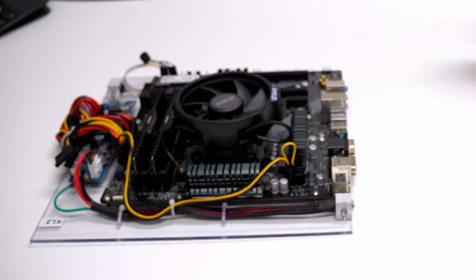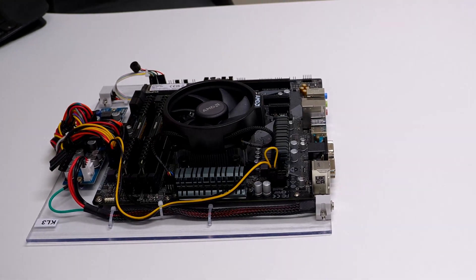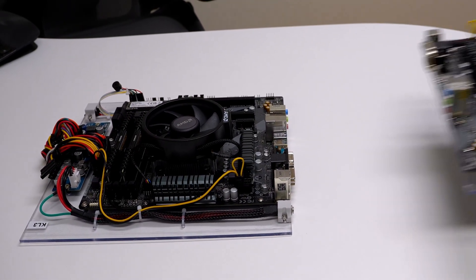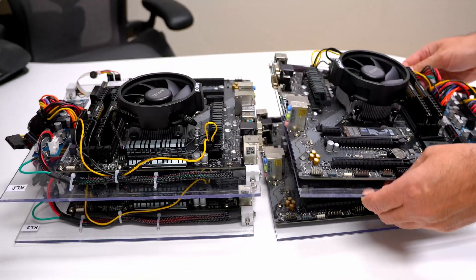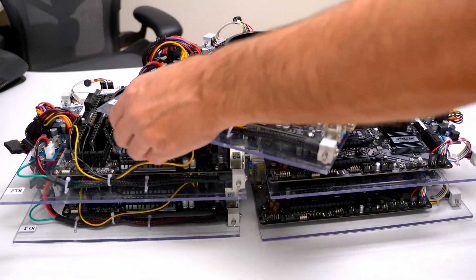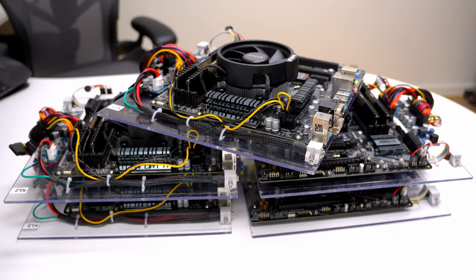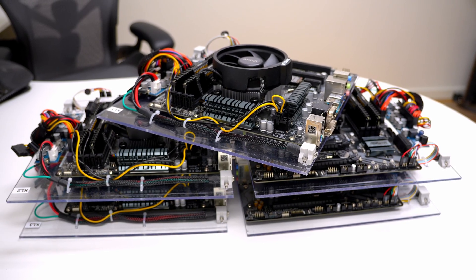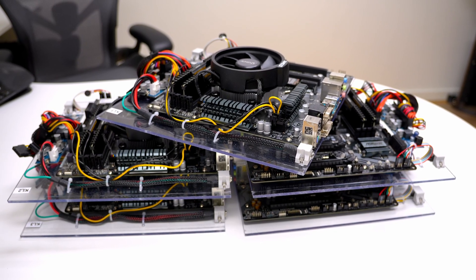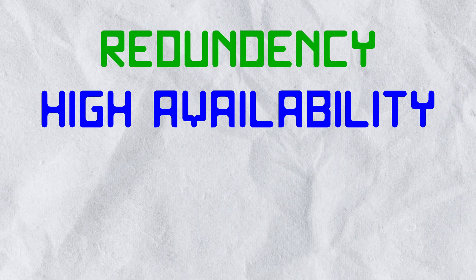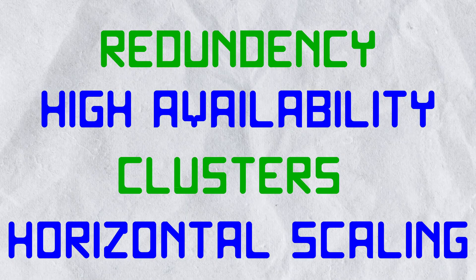In a previous video, I built my own blade server, but I didn't stop there. Not one, not two, not three — I built five. But why? What purpose do they serve? Why build five of these instead of spending the same money on one powerful machine? That question came up a lot in the comments, and in this video we are going to answer it. We are going to explore concepts such as redundancy, high availability, clusters and horizontal scaling.